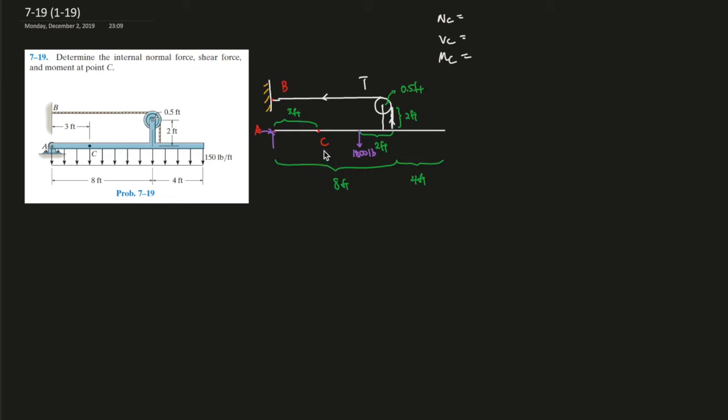First, find the global equilibrium. So we're already simplified at this force distribution over here, 150 pounds per foot times 12 foot, which gives you 1,800 pounds.